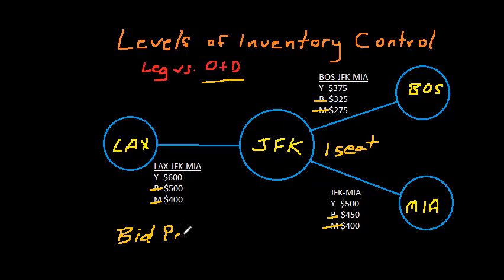So leg level systems compared to O and D systems, O and D systems in theory capture a greater portion of the revenue that is available to the airline. They're also more difficult to use though.